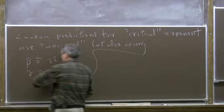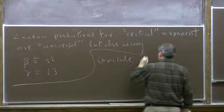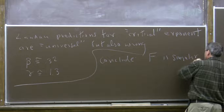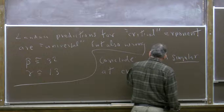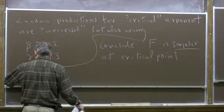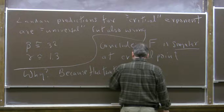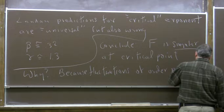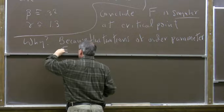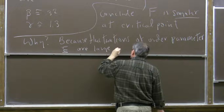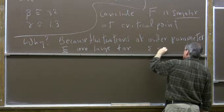What we conclude from this failure is that F is singular at the critical point. The qualitative reason is that fluctuations of the order parameter psi about its mean value are large for epsilon small — that is, for temperature close to the critical temperature.